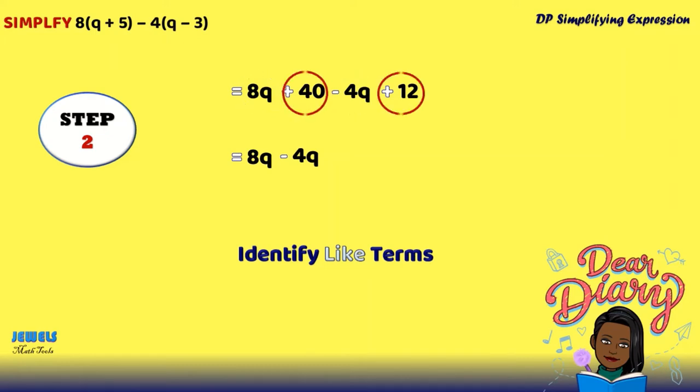Our second set of like terms will be our remaining 40 and our number 12. Both of these numbers are constants and since they are both numbers, they are considered like terms. So we're going to also group those two numbers together.